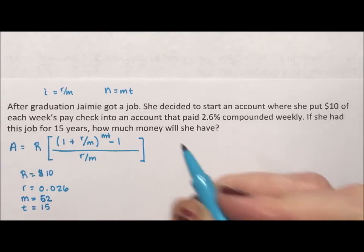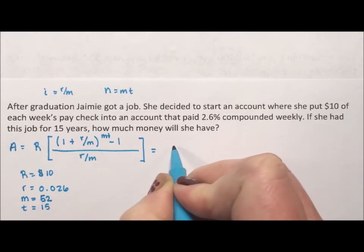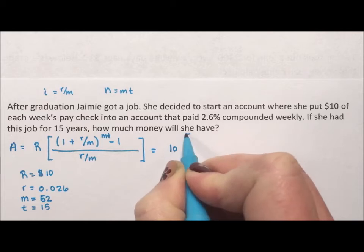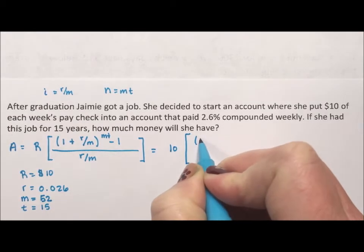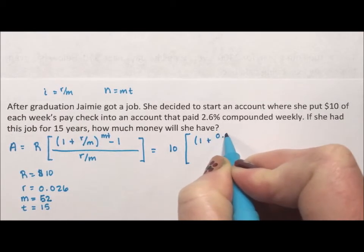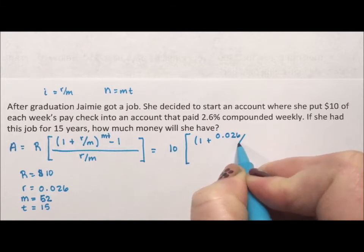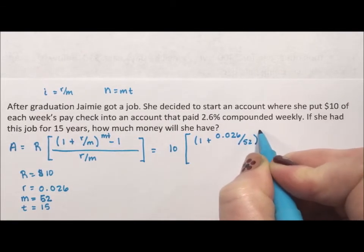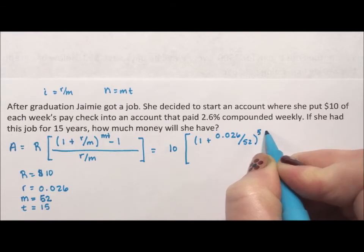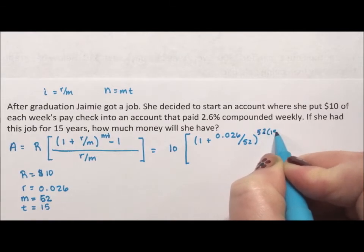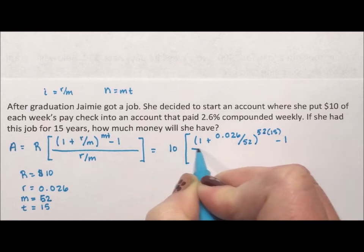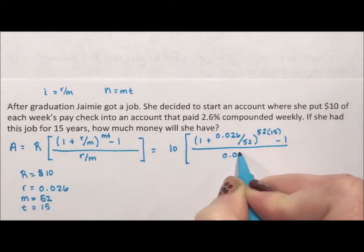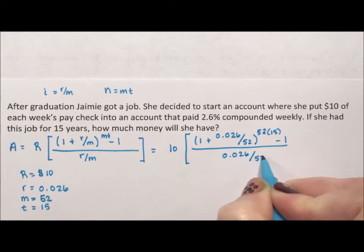Now we substitute all of this in. We have 10 times bracket 1 plus 0.026 divided by 52, close parentheses, to the 52 times 15, minus 1, all over 0.026 divided by 52.